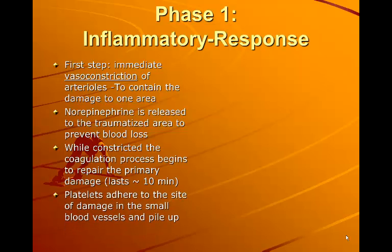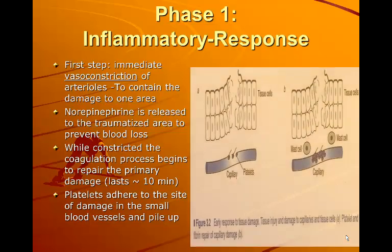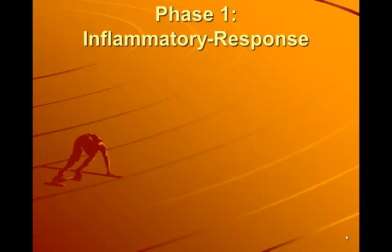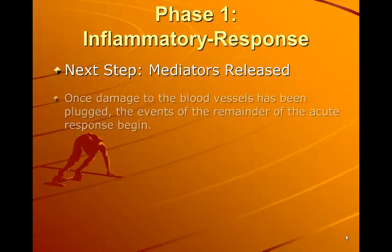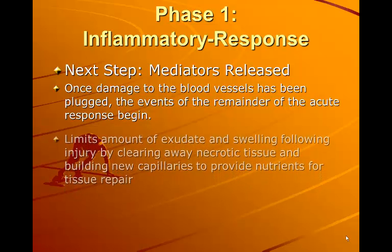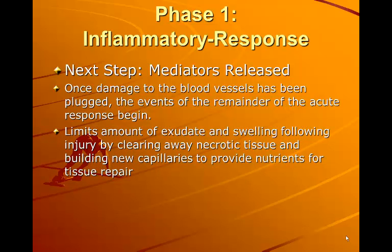Platelets adhere to the site of damage in the small blood vessels and pile up. Next, the mediators are released to the area. Once damage to the blood vessels has been plugged, the events of the remainder of the acute response begin. This is going to limit the amount of exudate — extra inflammation, fluid, and swelling following injury — by clearing away necrotic tissue and building new capillaries to provide nutrients for tissue repair.